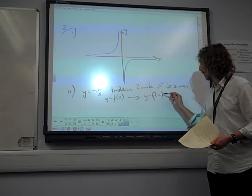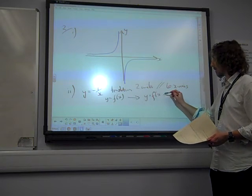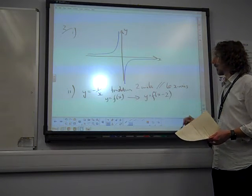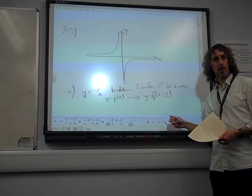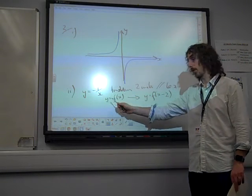Translation two units parallel to the x-axis. That's the one where f of x goes to, well that's an x-axis one means it's inside the bracket, doesn't it? So it's f of, inside the bracket we want the translation to be, it's going to be x minus two. Because that's two units in the positive direction, remember?